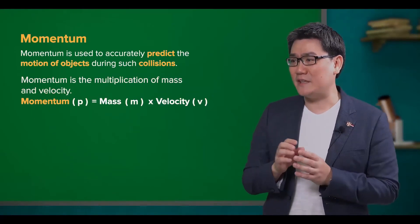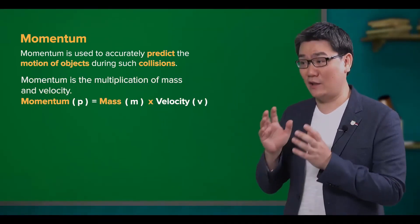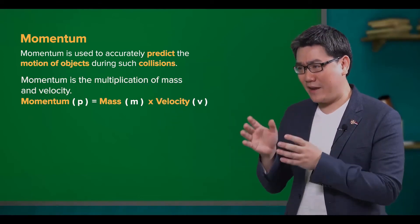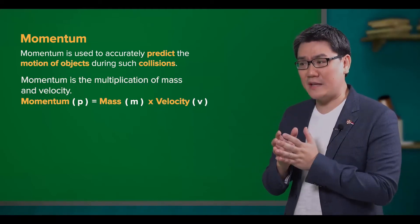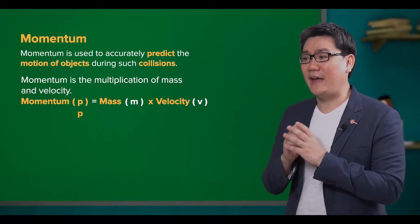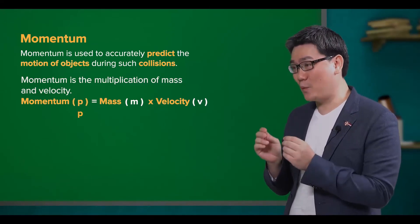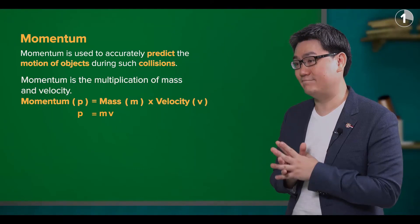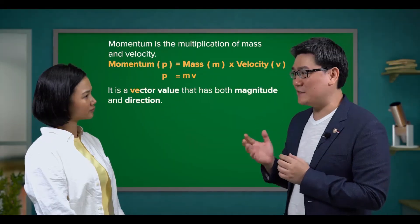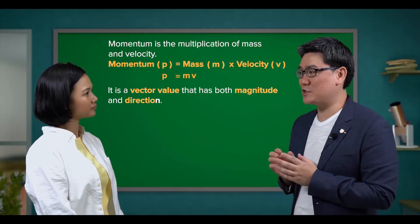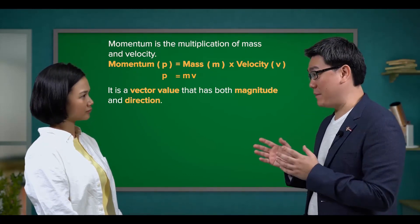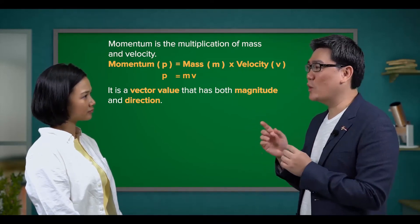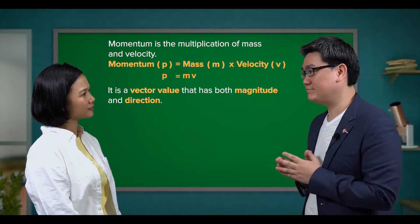Well, momentum is simply the multiplication of mass and velocity of an object. The formula is very simple. Momentum is represented with the symbol P, and the formula is P equals M times V. It is a vector value that has both magnitude and direction. So you need to remember your directions, as well as your positives and negatives when working with this value.